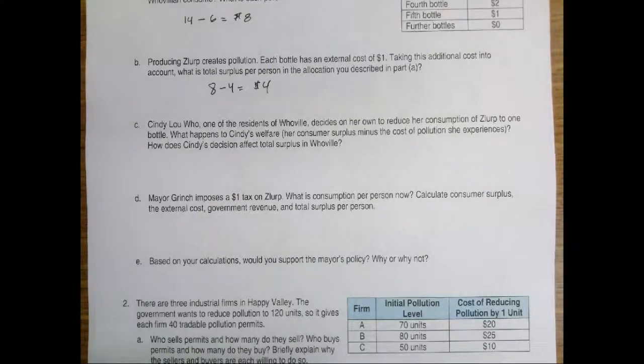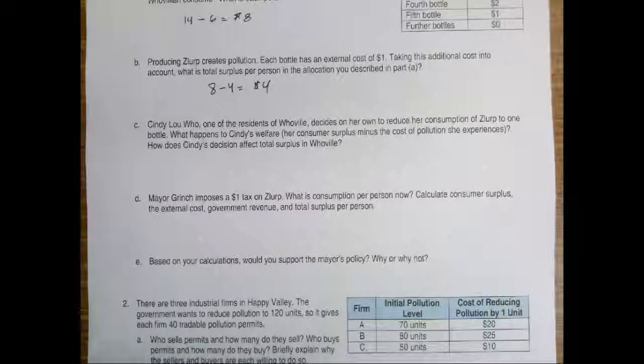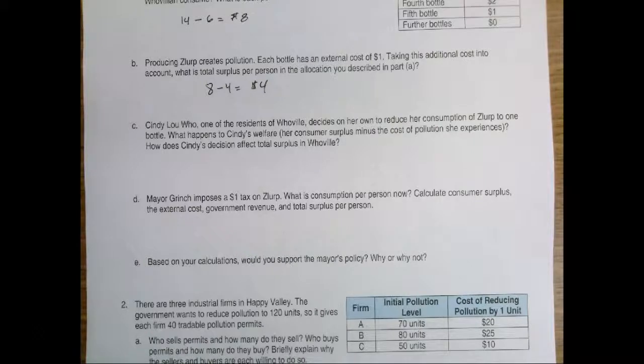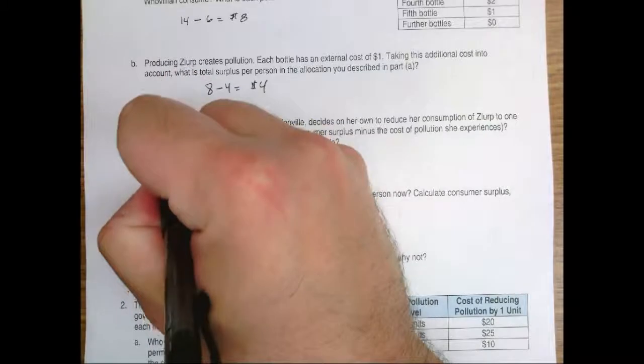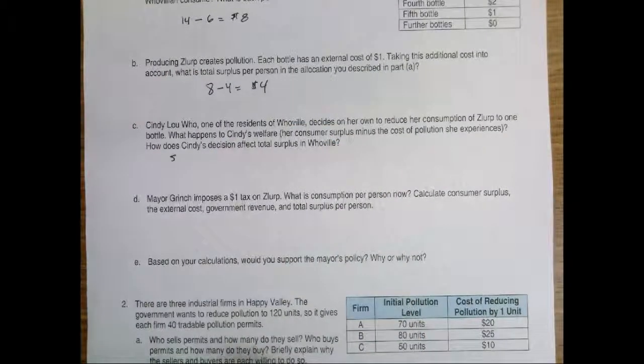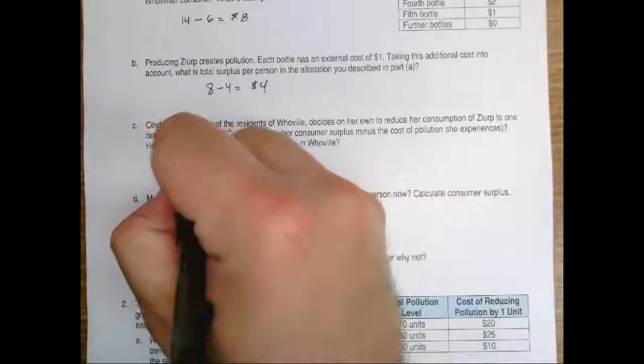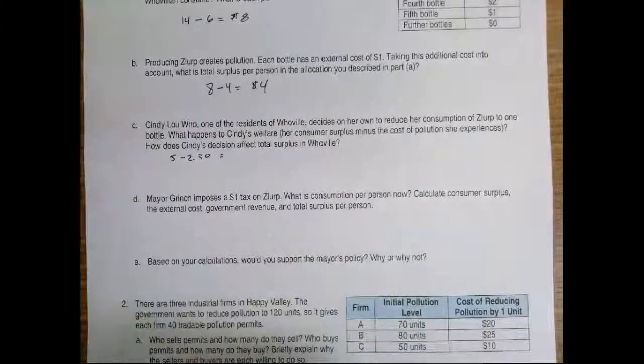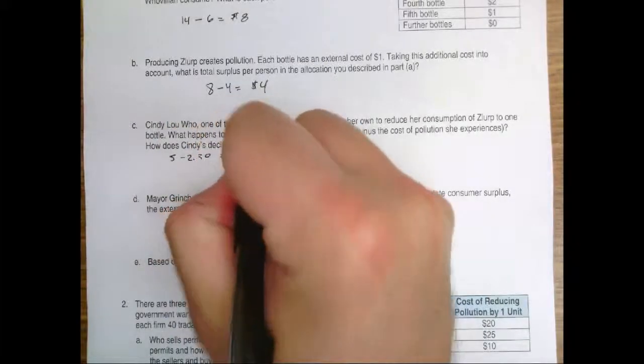We know that the actual total cost of Zlerp is $2.50 per bottle. So when she buys the first bottle she has $5 that she's willing to pay and subtract the $2.50 which is her cost and we find that she gets $2.50 in surplus.